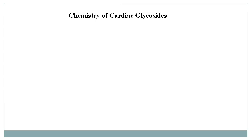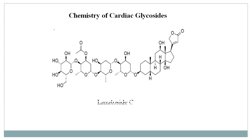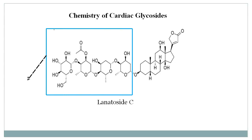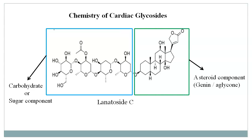Now, about the chemistry of cardiac glycosides. Here is the structure of lanatoside C, which is a good example of a cardiac glycoside having 4 sugar residues — specifically 3 digitoxoses and 1 glucose. These cardiac glycosides have 2 main components: one is a carbohydrate or sugar component, and the second is a steroidal component which is also called genin or aglycone. Combined, this carbohydrate and steroidal component are called cardiac glycosides.